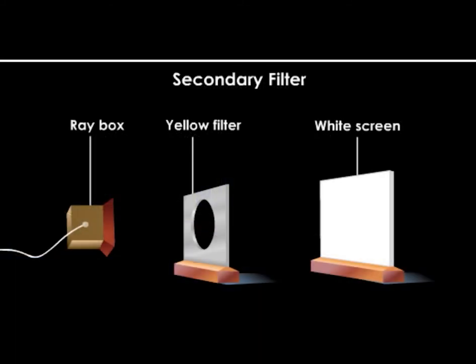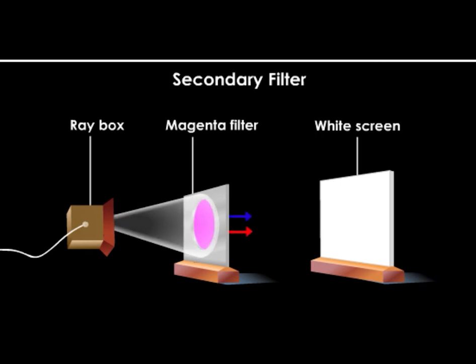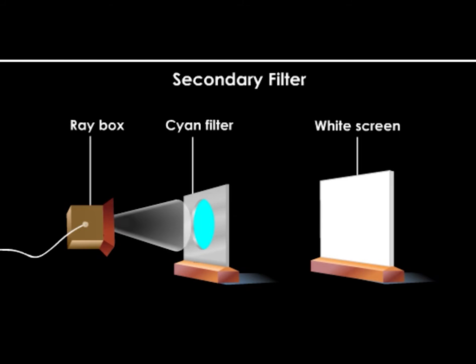A secondary color filter only enables its own color and the primary colors that form it to pass through. For example, when white light passes through a magenta filter, it will allow only red and blue light to pass through it. From the simulation, we can see that the secondary filter only allows its own color and the colors that form it to pass through.